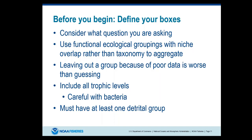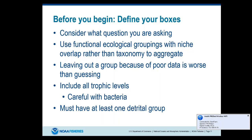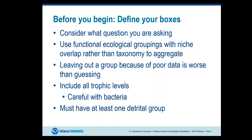It's not wise to leave any group out of your model just because you don't think the data is there. The way these models are set up, you can sort of let the model figure out what the biomass should be by specifying what's called an ecotrophic efficiency, which I'll get to in a bit. This allows you to make sure you have the whole trophic structure in your model — including not just top-level predators where data is sometimes lacking, but also lower trophic levels. You want to make sure you include things like bacteria because the microbial loop can be very important, but be careful because bacteria can grow exponentially and get out of hand quickly.